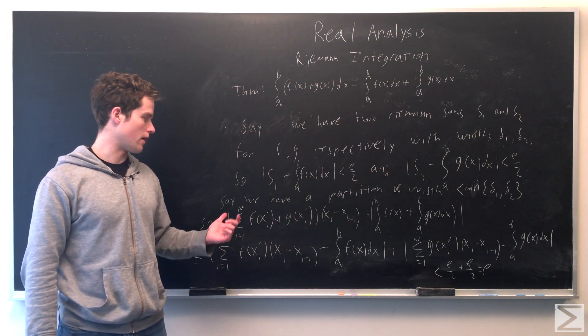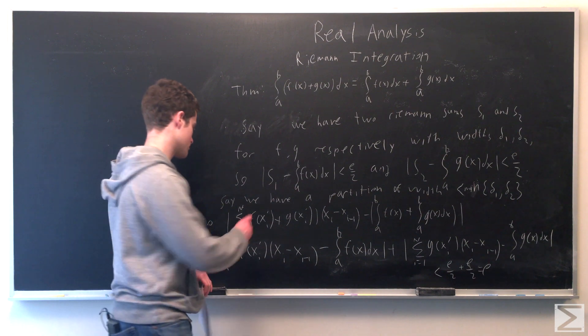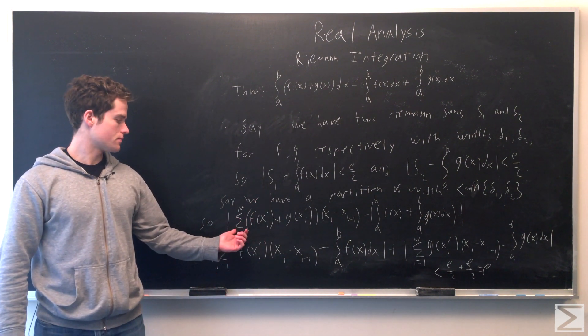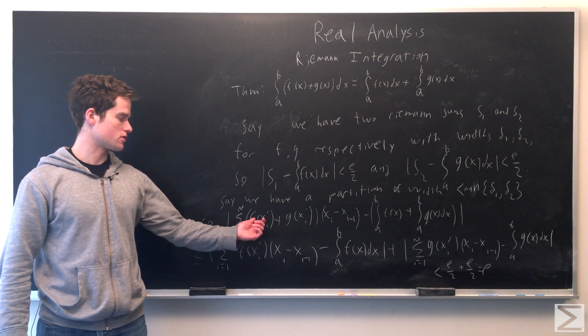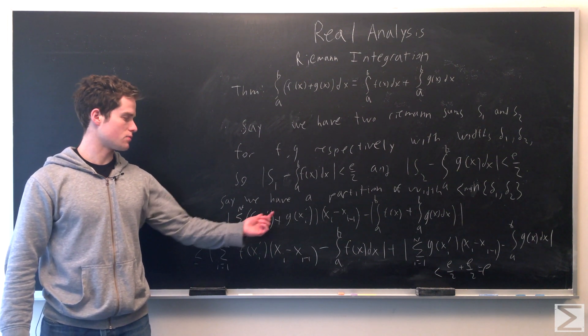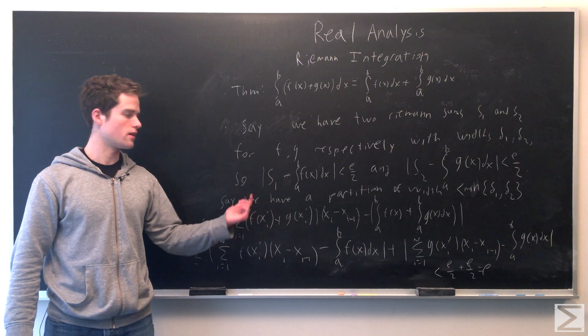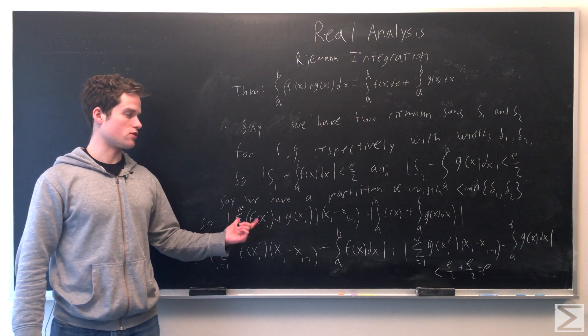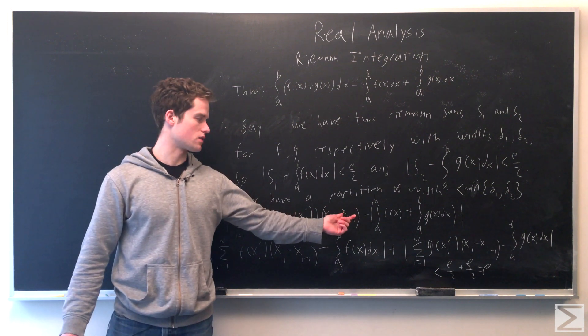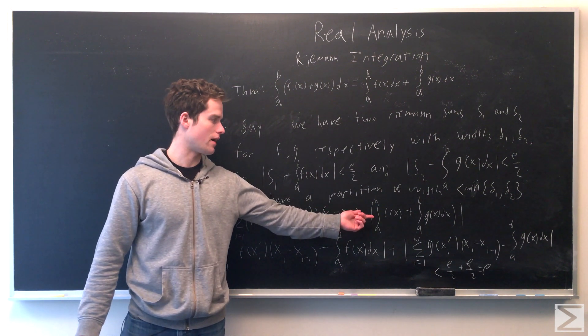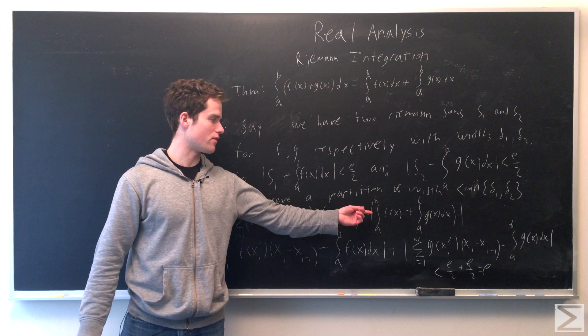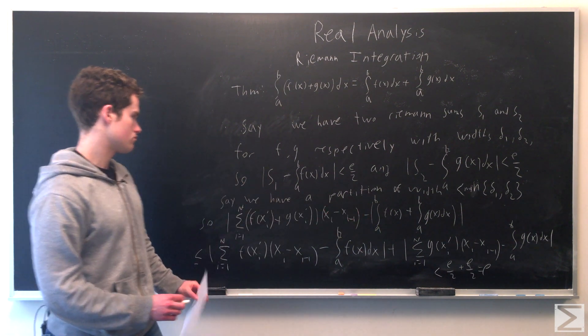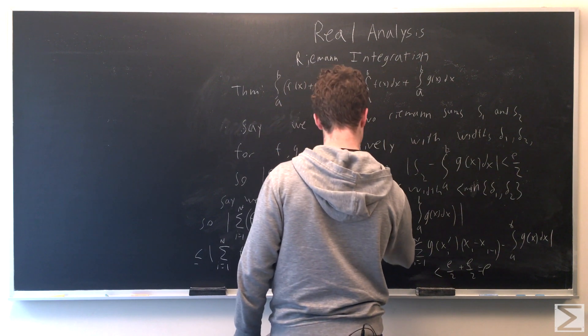Now we want to show for our sum - our function is f(x) + g(x). Xᵢ is just the x between xᵢ and xᵢ₋₁. We want to show for a partition small enough, this gets as close as we want to ∫ₐᵇ f(x)dx + ∫ₐᵇ g(x)dx.